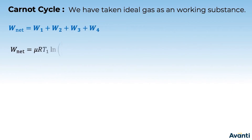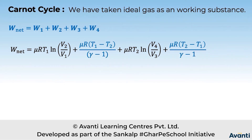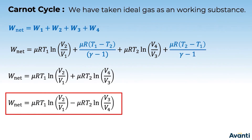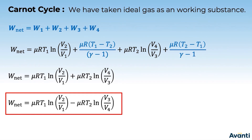To find the net work, we sum all four steps: μRT1 ln(V2/V1) from step 1, plus μR(T1−T2)/(γ−1) from step 2, plus μRT2 ln(V4/V3) from step 3, plus μR(T2−T1)/(γ−1) from step 4. The two adiabatic work terms cancel each other out, so the net work is just the sum of the isothermal works: μRT1 ln(V2/V1) + μRT2 ln(V4/V3). To summarize: the Carnot cycle consists of isothermal expansion, adiabatic expansion, isothermal compression, and adiabatic compression.